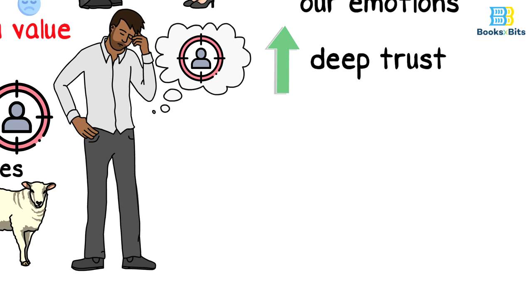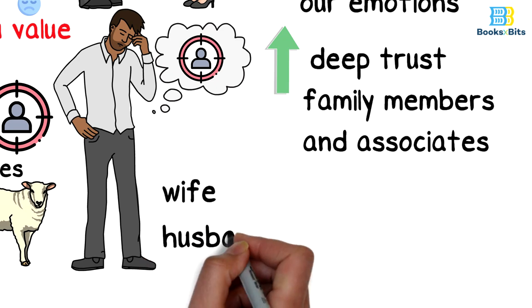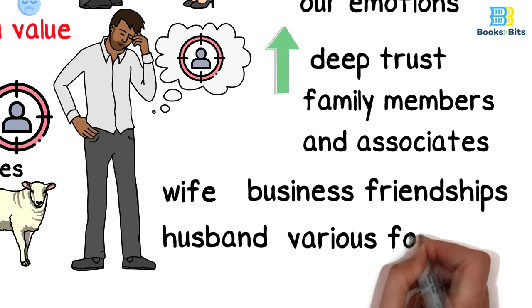People who can manipulate your emotions and feelings can be summarized as follows: family members and associates, wife or husband, business friendships and various forms of fellowship.